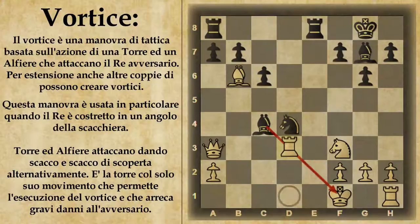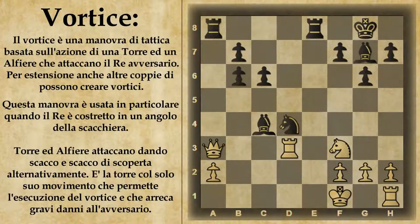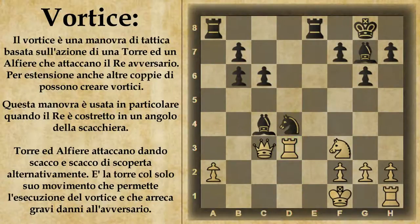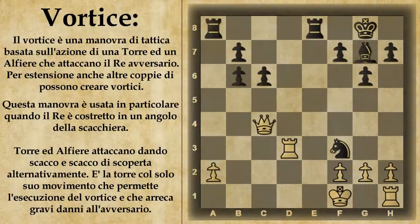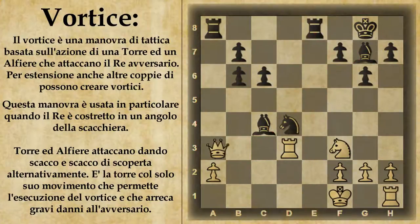Qui il bianco aveva l'opportunità di giocare torre d3, ma sarebbe andata comunque male perché il nero può giocare alfiere per b6, attaccando quindi la donna bianca. Se questa vuole continuare a difendere la torre si dovrà posizionare ad esempio in c3, ma a questo punto segue cavallo per f3 e il nero minaccia matto in e1 con la torre. Inoltre ha aperto un attacco sulla donna avversaria, quindi se il bianco vuole salvare la donna prende matto. Inoltre il bianco ha anche questa torre sotto, quindi la situazione è molto brutta.